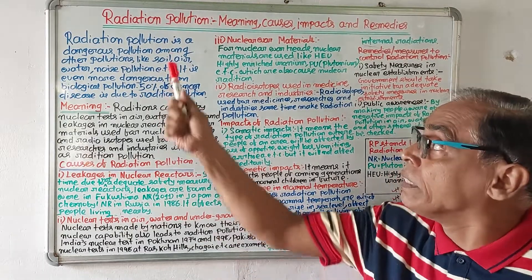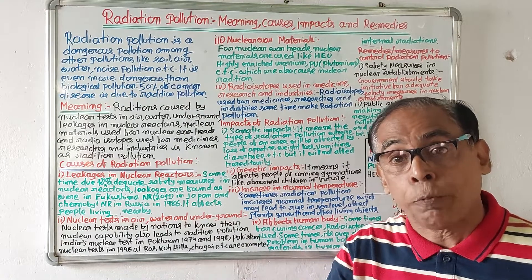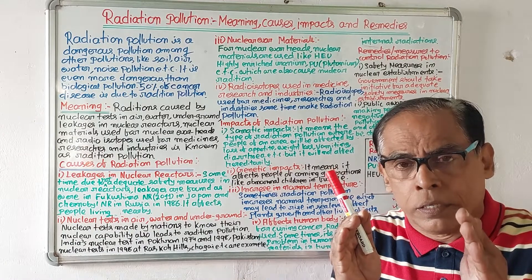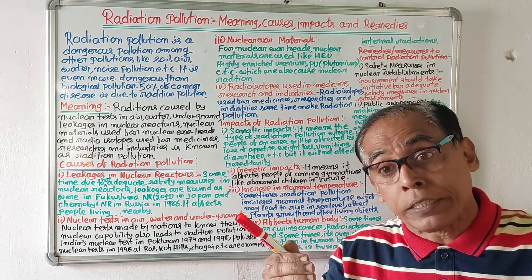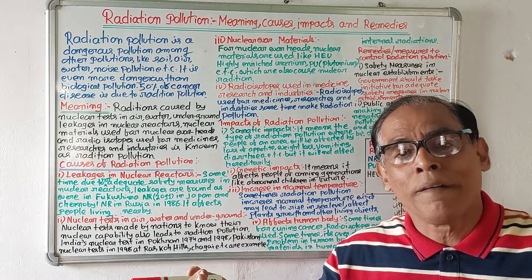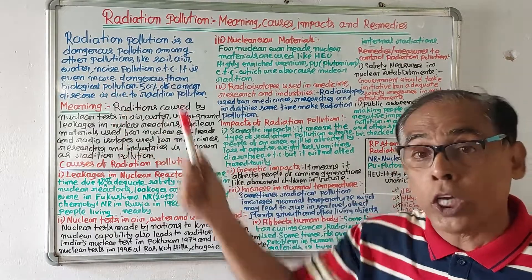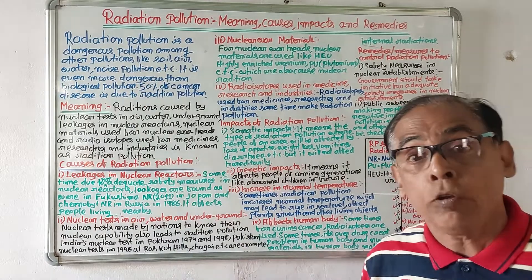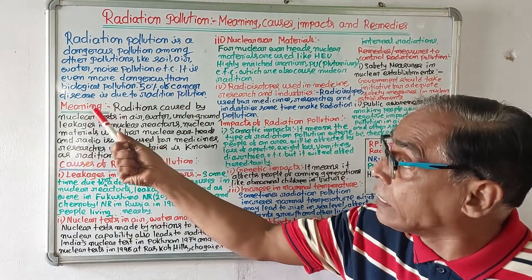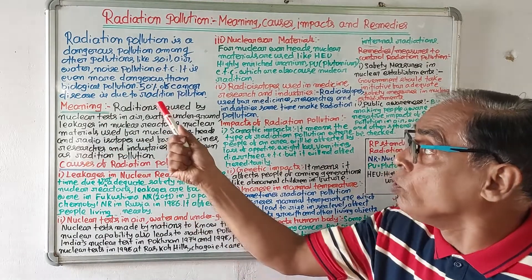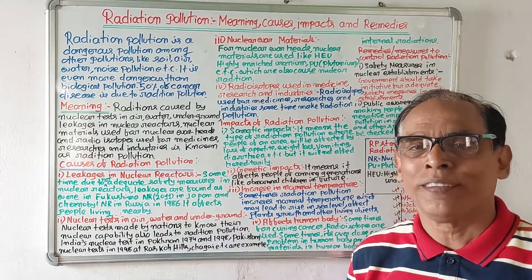Radiation pollution is a dangerous pollution among other pollutions like soil pollution, air pollution, water pollution, and noise pollution. In the environment there are many types of pollution problems, but radiation pollution is very dangerous — even more dangerous than air pollution, soil pollution, water pollution, and noise pollution. It is said that 50 percent of cancer disease is due to radiation pollution, making it a very fatal and dangerous pollution.